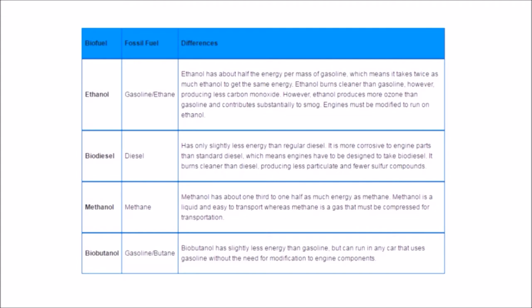Ethanol is found in all gas blends. Because of the plenitude of sugar in Brazil, they change over sugar into ethanol and centralization of ethanol is 95% in gas utilized as a part of Brazil.